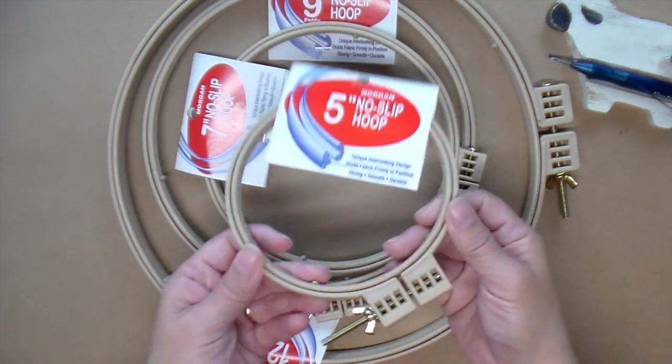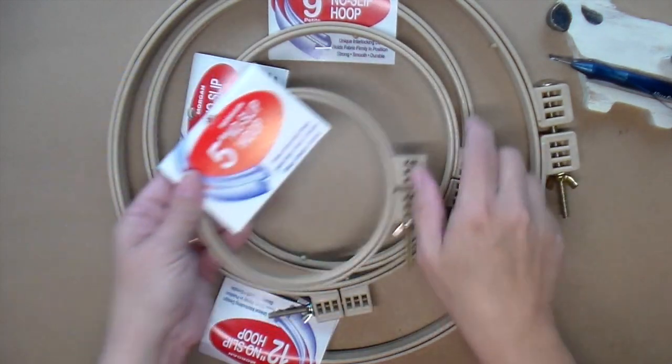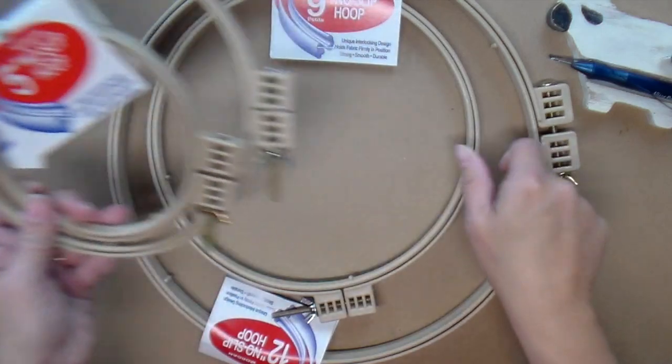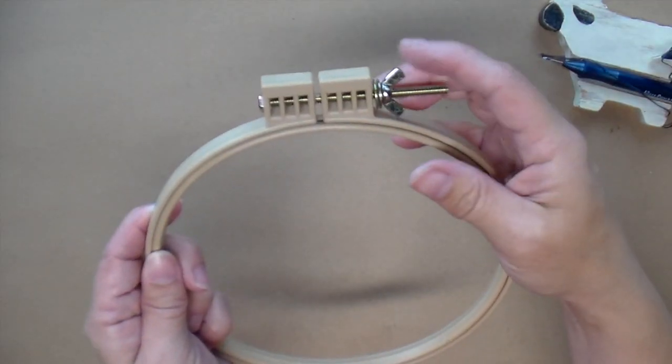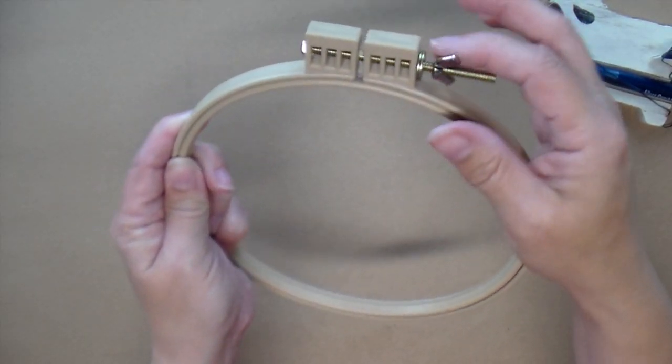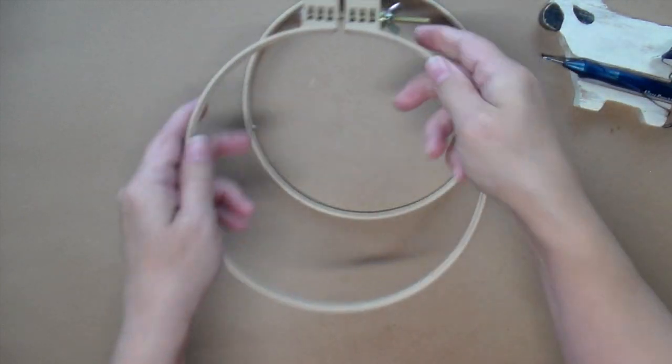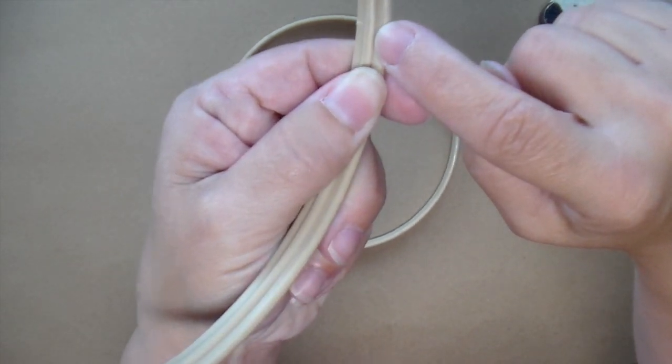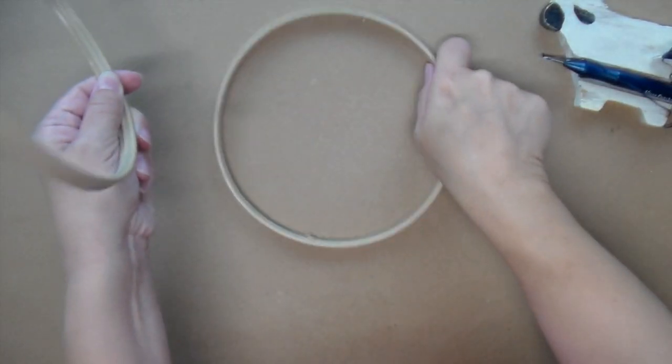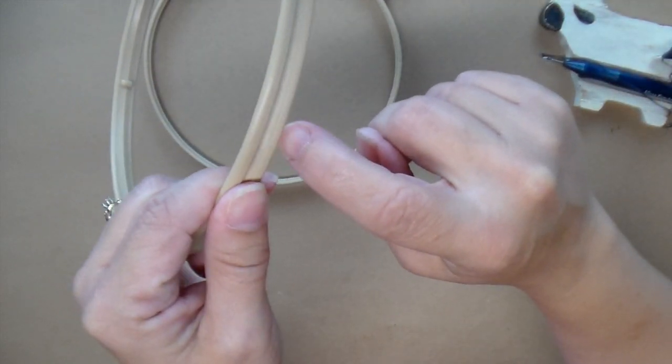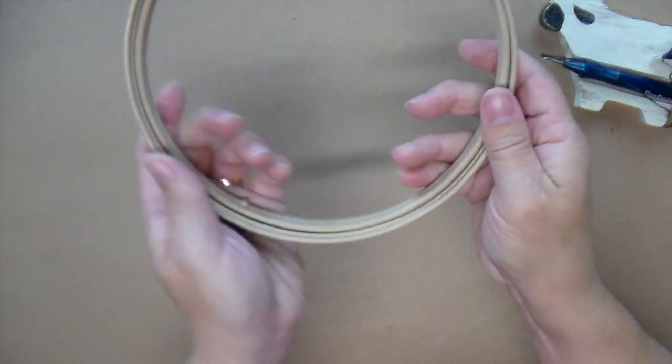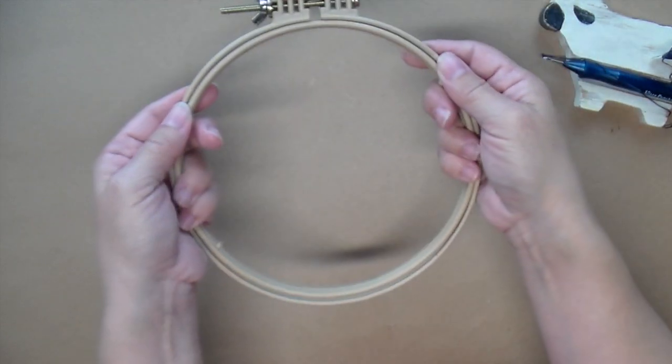So you can get these Morgan No Slip Hoops. They come in a variety of sizes. Here I've got 5 inch, 7 inch, 9 inch, and 12 inch. They have a wing nut that you can tighten and loosen to get the fabric on. They have a lip on one side of the hoop that goes all the way around. On the other side of the hoop it has a groove and the two parts fit together to form a lock so that it keeps the fabric tight longer.